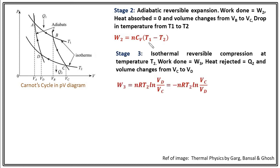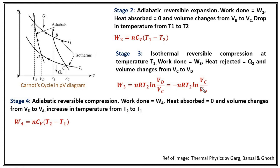In stage 3, isothermal reversible compression of the gas occurs at temperature T2, the temperature of the cold reservoir. Work done is W3, heat rejected is Q2, and volume changes from Vc to Vd. Therefore W3 equals nRT2 ln(Vd/Vc), which we rewrite as minus nRT2 ln(Vc/Vd) since Vd is less than Vc. In the fourth and final stage there is adiabatic reversible compression, with work done W4, heat absorbed zero, volume changes from Vd to Va, and temperature increases from T2 to T1. W4 equals NcV(T2 minus T1), completing the whole cycle.